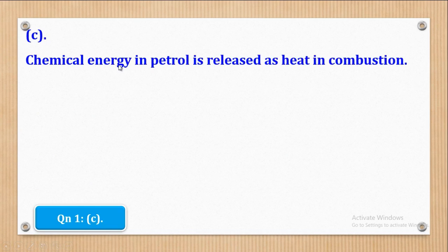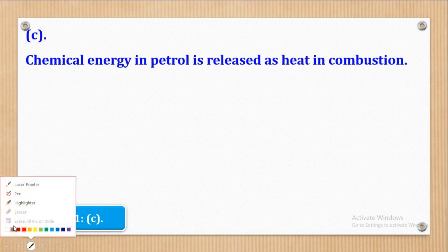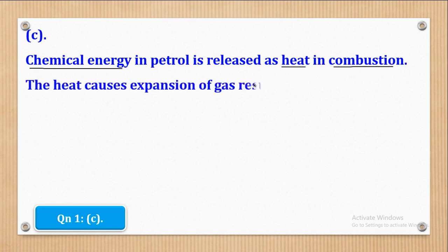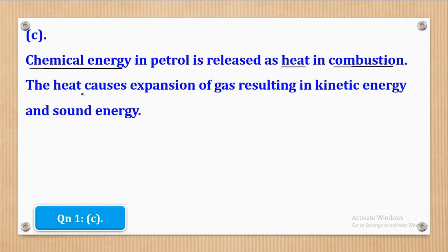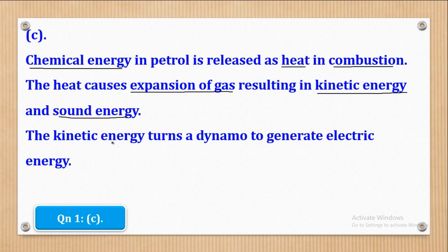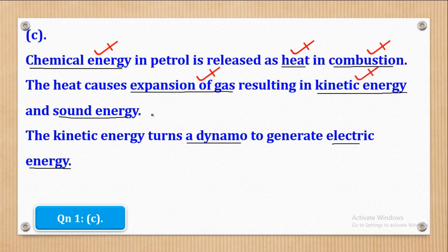First, chemical energy in petrol is released as heat during combustion. Then the heat causes expansion of gases, resulting in kinetic energy and sound energy. Finally, the kinetic energy turns a dynamo to generate electrical energy. For marking: chemical energy, heat, combustion, expansion of gases, kinetic energy, sound energy, dynamo, and electric energy are all key terms needed to earn the four marks.